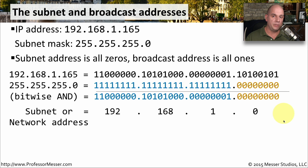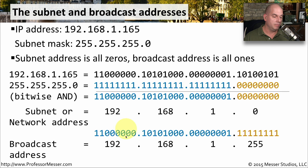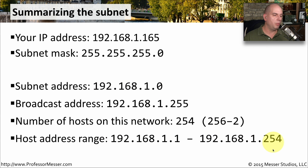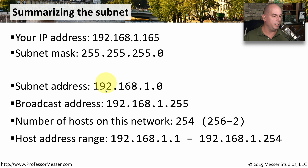To determine the broadcast address for this network, change all host values to 1 and perform the same calculation. With 1s in the host positions, we get 192.168.1.255 — that is the broadcast address for this subnet. So to recap: IP address 192.168.1.165 with subnet mask 255.255.255.0 gives a subnet address of 192.168.1.0 and a broadcast address of 192.168.1.255.